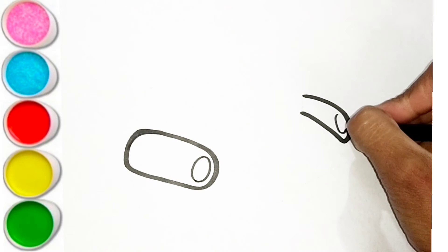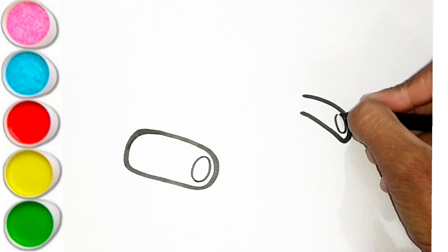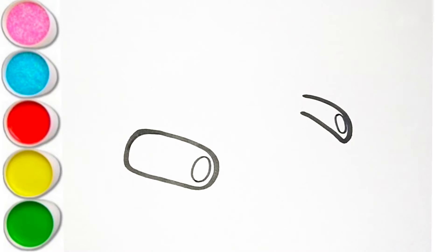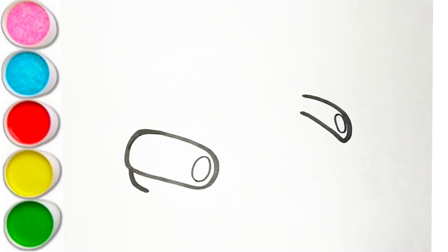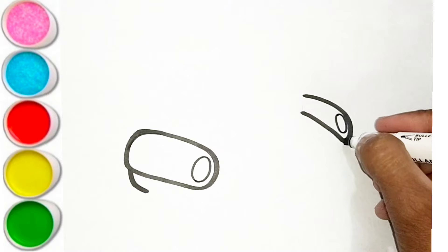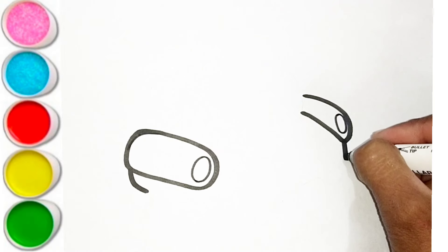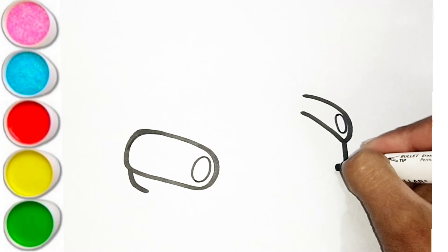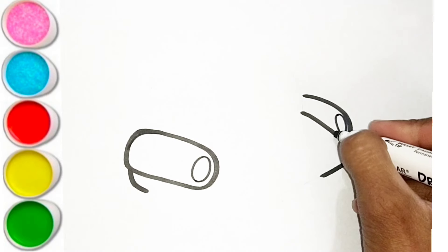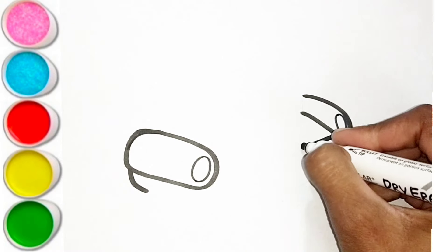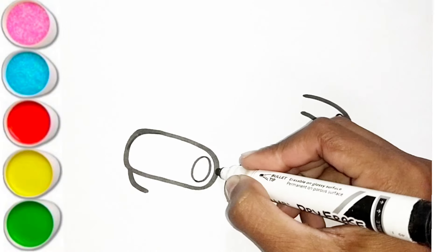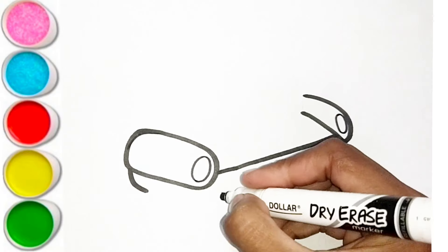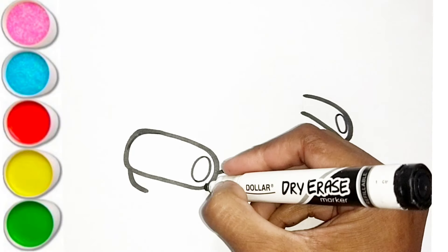E is for Elephant, E-E-Elephant. F is for Frog, F-F-Frog. G is for Goat, G-G-Goat. H is for Hand, H-H-H-Hand.